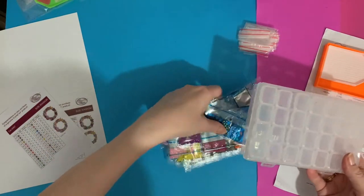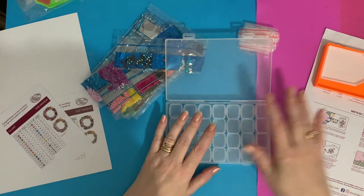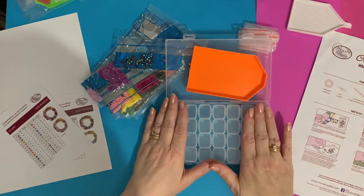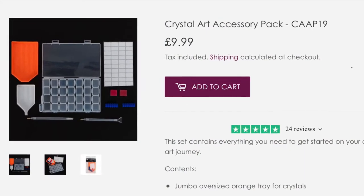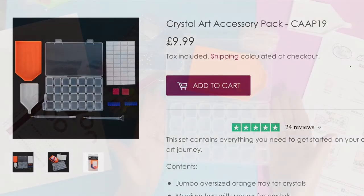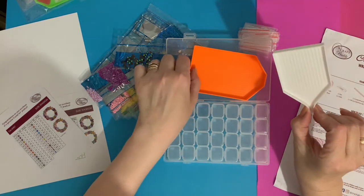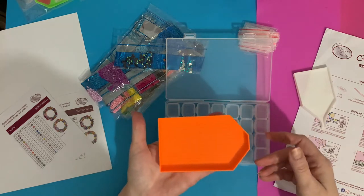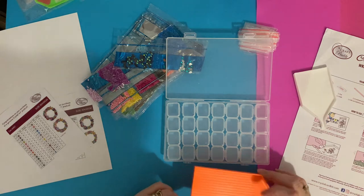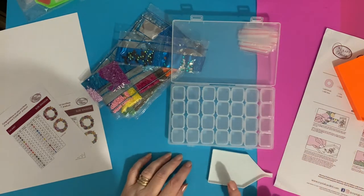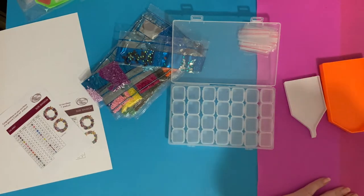I've got my little 28 storage container from the extra toolkit that you can get. I'll put a link and photograph in so you can see that. That's from Craft Buddy Crystal Art and you get your little pouring tray and your weighted orange tray, which doesn't easily tip over.